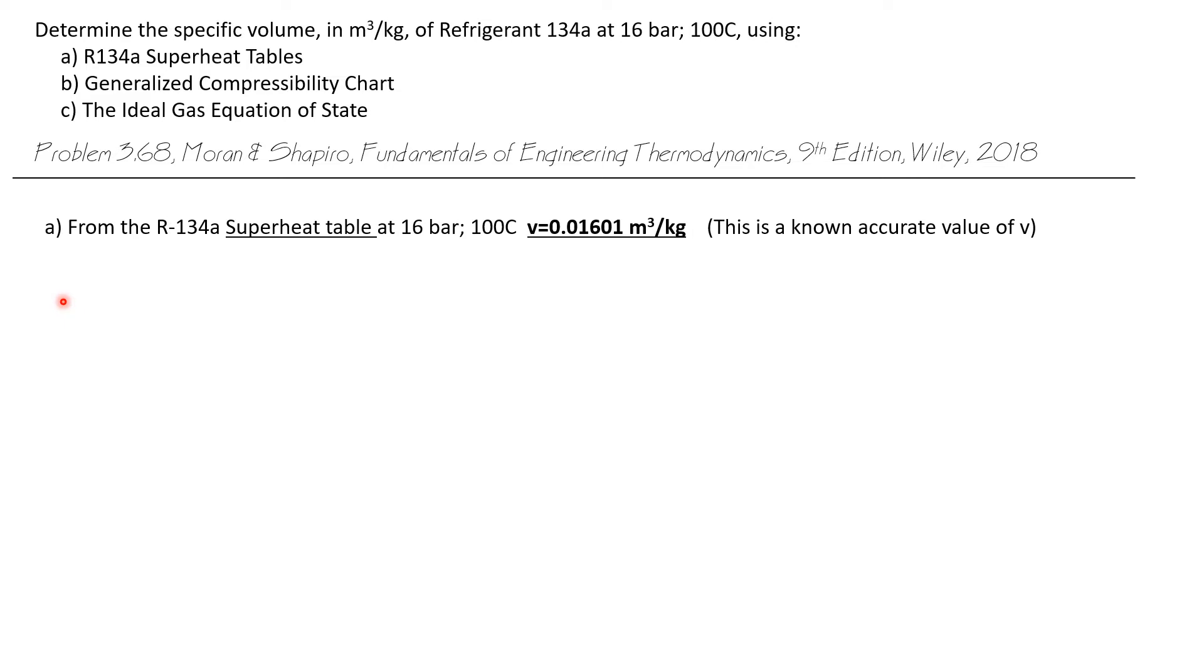So let's look at the first problem. Let's go to the R134A superheat table at 16 bar and 100 degrees C. And we get a specific volume of 0.01601 cubic meters per kilogram. So this is our known accurate value of specific volume.